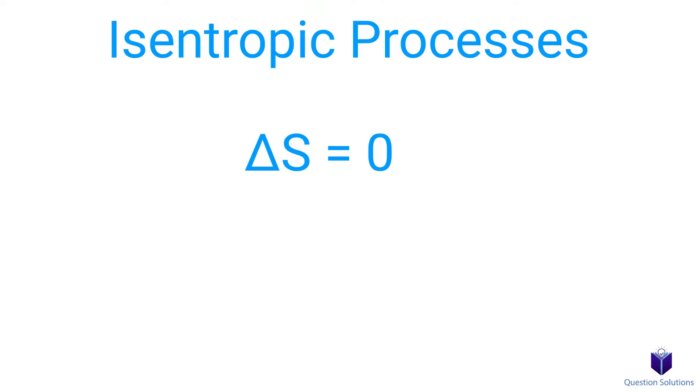Sometimes we need to solve questions involving isentropic processes. That just means a process where entropy remains constant, or in other words, the initial entropy is equal to the final entropy.